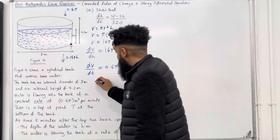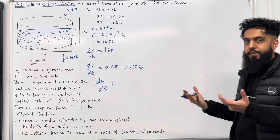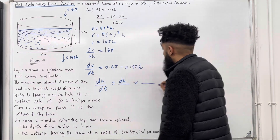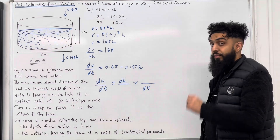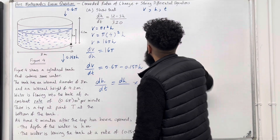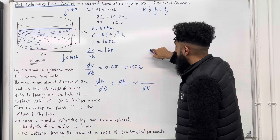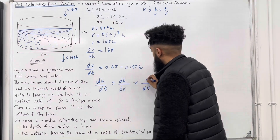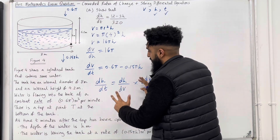To get dH/dt, I need to use connected rates of change. I have dH/something multiplied by the same something/dt. We've got three variables here: V, H, and T. We've used up H and T, so what remains is V. The blank is dV — the dV cancels, giving us dH/dt. Hence the left and right sides are equivalent.